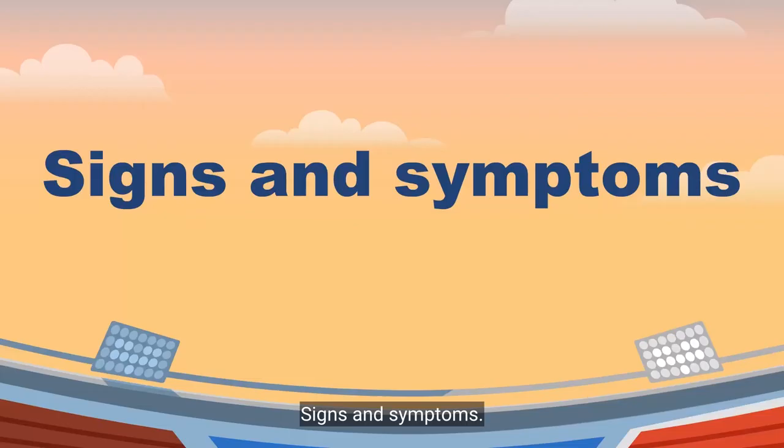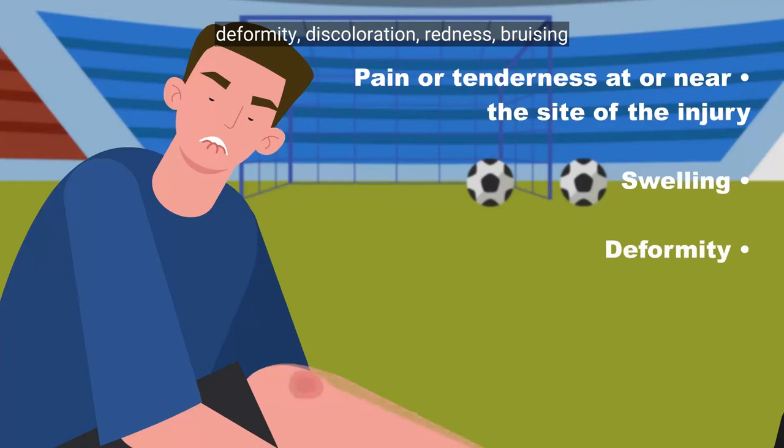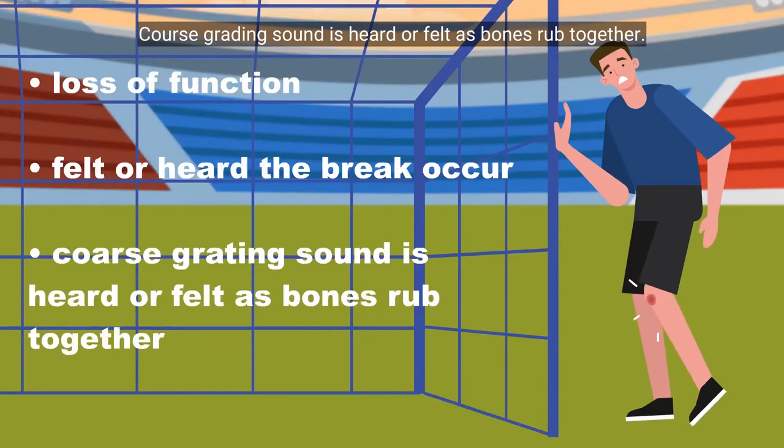Signs and symptoms — Fracture: pain or tenderness at or near the site of the injury, swelling, deformity, discoloration, redness, bruising, loss of function, felt or heard the break occur, or a coarse grating sound is heard or felt as bones rub together.